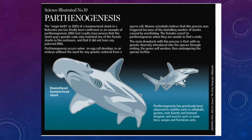There have been some stories, like this bonnet head hammerhead shark, thought to have undergone virgin birth. DNA testing of the pup showed it was genetically identical to the parent — the egg just developed into a new organism. This is relatively rare in sharks but is seen sometimes in insects, lower organisms, reptiles, and similar animals.